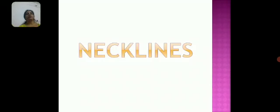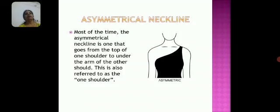Necklines — in this we discuss the various types of necklines in garments. Asymmetrical neckline: most of the time the asymmetrical neckline goes from the top of one shoulder to under the arm of the other shoulder. This you can see in the diagram easily.